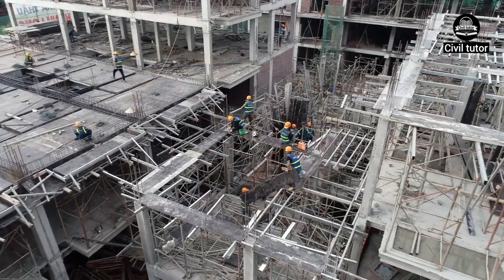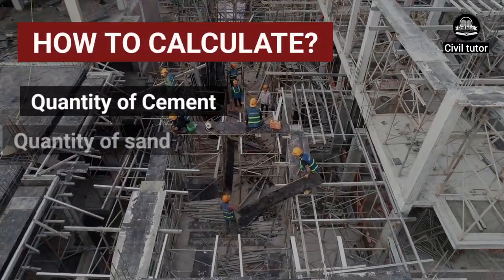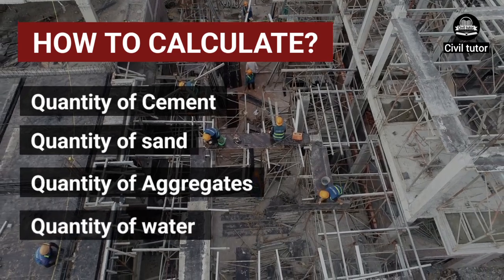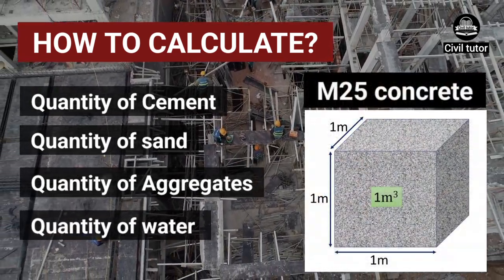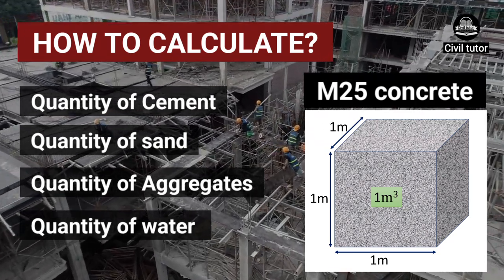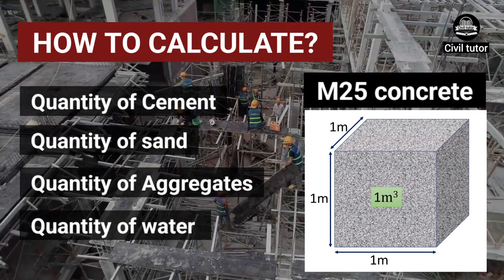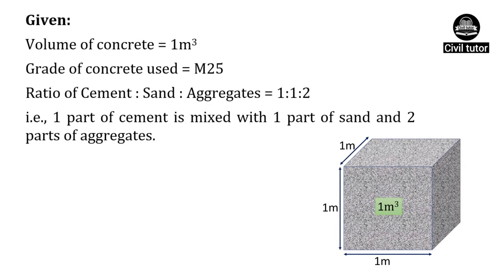In this lecture, I am going to show you how to calculate the quantity of cement, sand, aggregates, and the quantity of water required for casting 1 meter cube of M25 grade of concrete. We need to calculate the quantity of materials for 1 meter cube of M25 grade of concrete.